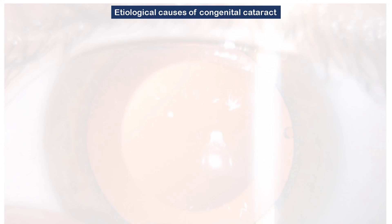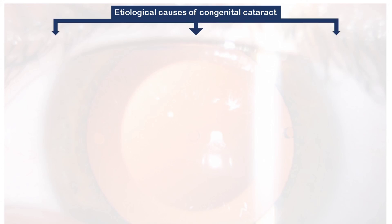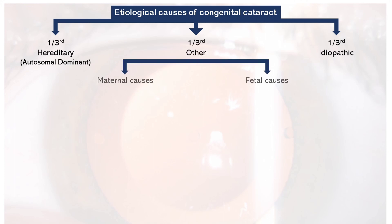Congenital cataracts are those present since birth. The etiological causes can be divided into three parts: one third is hereditary, and most of it has autosomal dominant inheritance; the next one third is idiopathic, meaning we are not sure about the cause; and the last one third has other causes, which can be maternal causes and fetal causes.